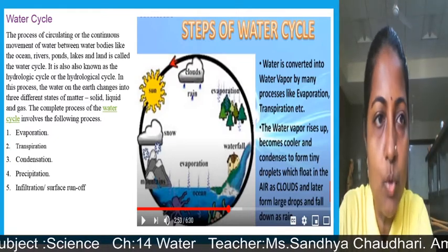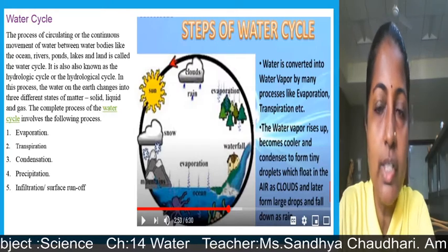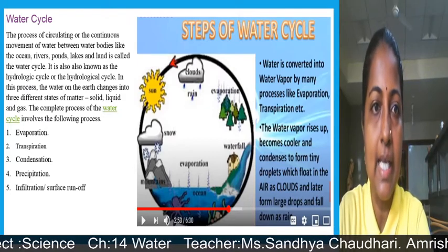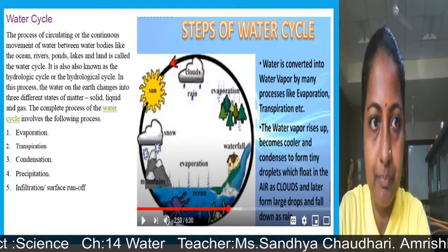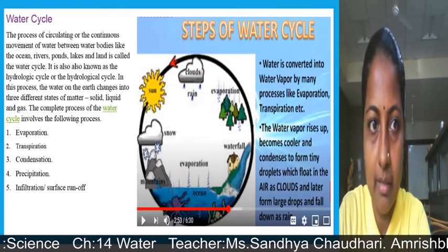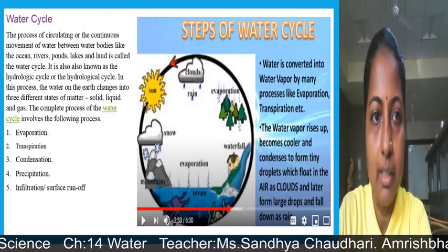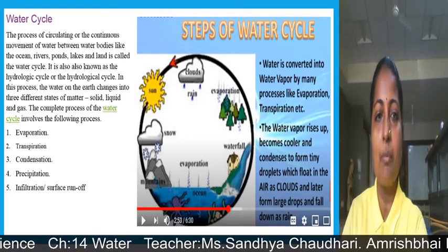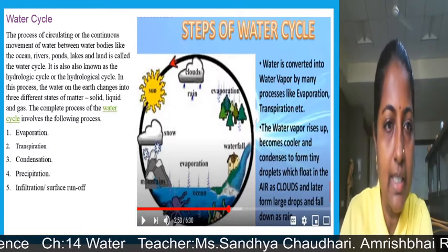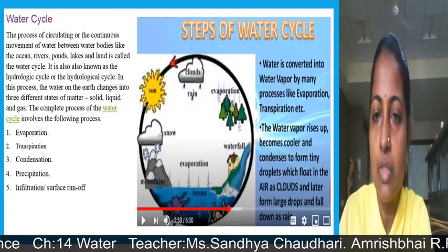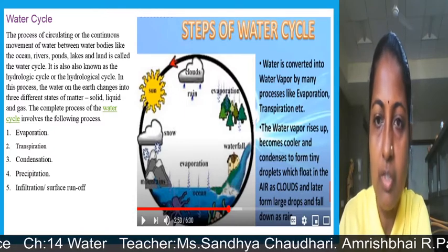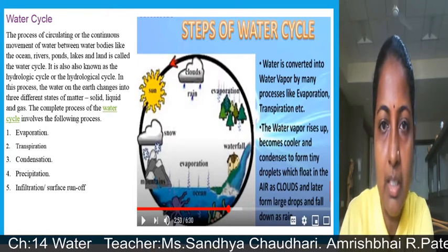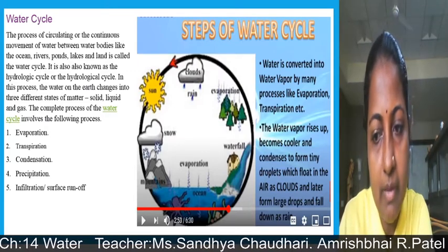The process of continuous movement of water between water bodies like oceans, rivers, ponds, lakes, and land is called the water cycle. It is also known as the hydrologic cycle or the hydrological cycle. In this process, water on earth changes into three different states of matter: solid, liquid, and gas. The complete process involves evaporation, condensation, transpiration, precipitation, and filtration or surface runoff.